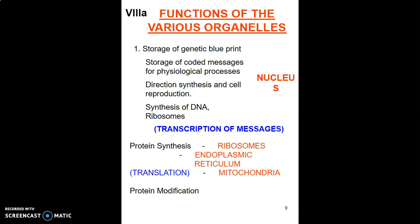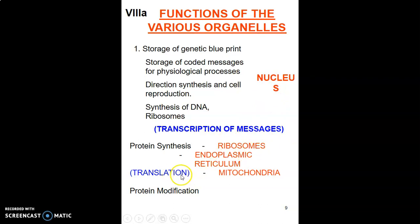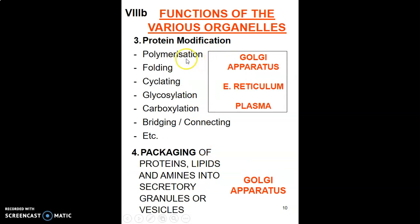and the endoplasmic reticulum also carries out protein synthesis. The mitochondria contain some genetic material and help to produce energy. Transcription of messages occurs within the nucleus; then at the ribosomes, translation occurs; and then the protein is synthesized and modification occurs in the Golgi apparatus. Modification comprises polymerization, folding, acylation, and glycosylation — fixing a glucose on a protein is called glycosylation.